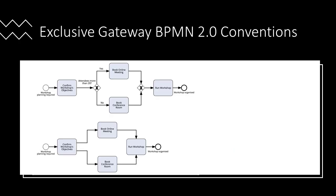This means that in this scenario the 'confirm workshop's objective' task is simply skipped and no action is required to plan the workshop. In this next example we have two very similar processes with the same process steps but only one is correct, and the correct process is the one above. At this point the process above is very familiar and we know it adheres to all BPMN 2.0 conventions.